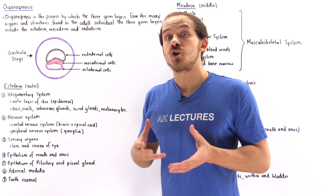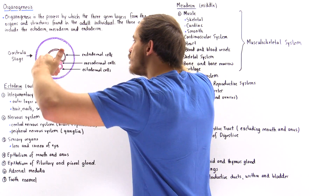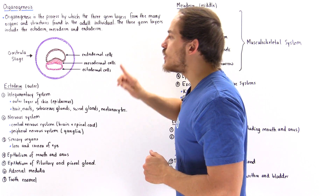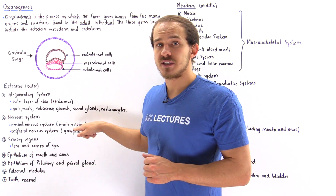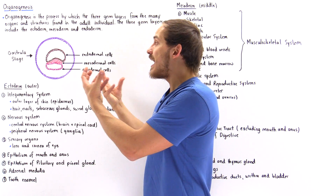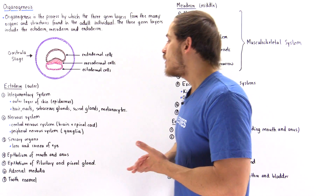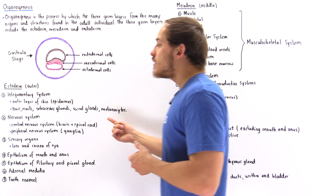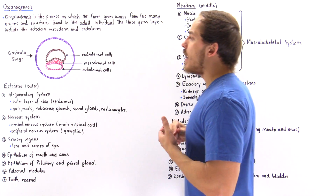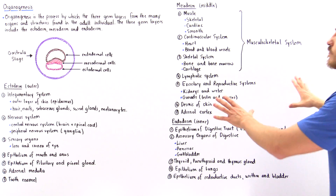As discussed in the process of neurulation, ectodermal cells invaginate and move into the embryo to form the neural crests and the neural tube. The neural tube gives rise to the central nervous system — the brain and spinal cord. The neural crest cells, which end up inside the embryo, give rise to the peripheral nervous system — all the nerve cells outside the central nervous system, known as the ganglia. So essentially the entire nervous system and integumentary system are formed by the ectoderm. The inner layer of the skin, the dermis, is actually formed from the mesoderm layer.